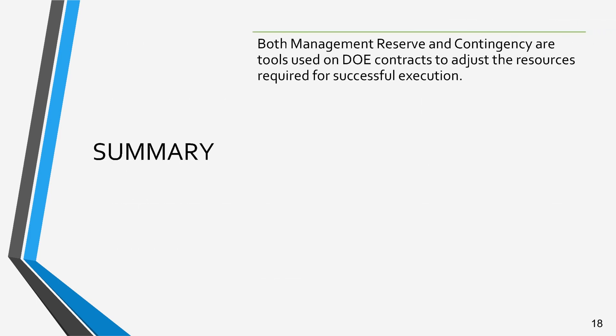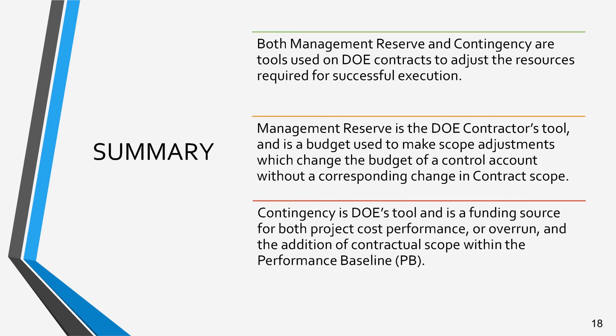In summary, both MR and contingency are tools used to adjust the resources as the project proceeds based on new information. They are required for successful execution of the performance baseline. MR is considered the contractor's tool in that it is a budget reserve set aside for contractor management use. The MR can be applied due to unexpected growth within the currently authorized work scope, rate changes, risk handling, and other project unknowns.